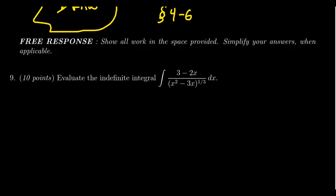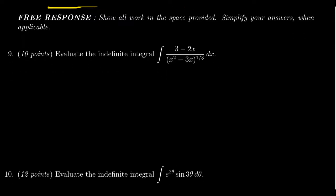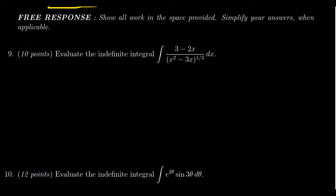Now we're reaching the free response section. These questions have variable points based upon their difficulty — I think the smallest one on this exam is worth 10 points, but most are in the 12-point range. Much like the short response, you can get partial credit on these questions, but unlike the short response, you must show all your work to get any credit. They are similar to short response in some regard, but they're going to be a little bit more challenging.